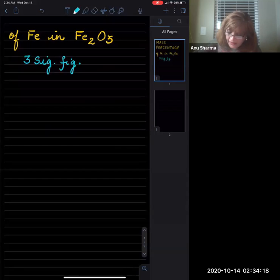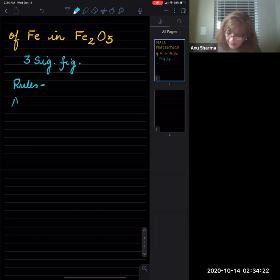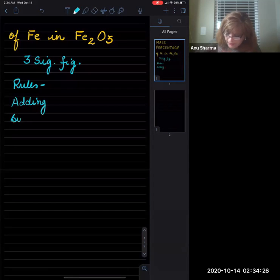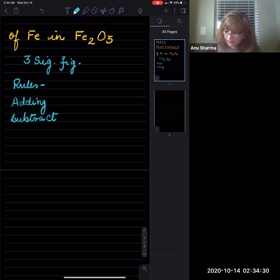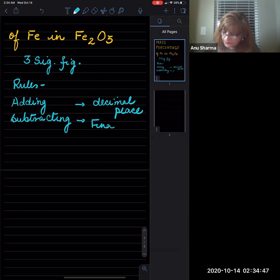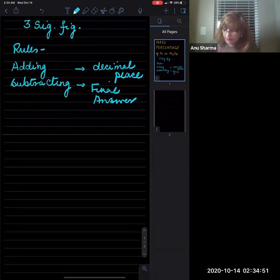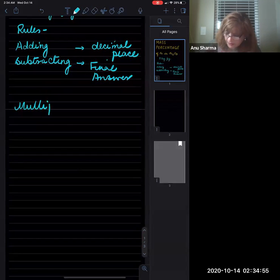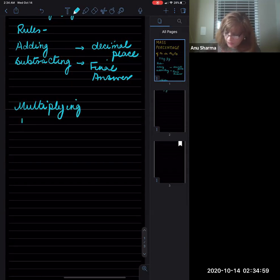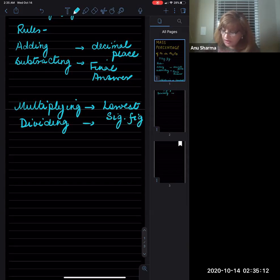So we know the sig fig rules: when you are adding or subtracting, we look at the decimal places in the final answer. And when you are multiplying and dividing, you are going to be looking at the lowest significant figures for the final answer. The lowest significant figures that were in the computation, that number is going to be in the final answer.